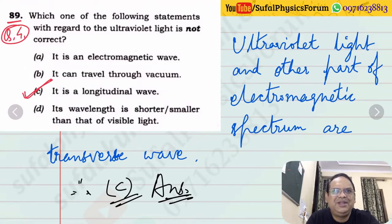Question number 4: Which statement about ultraviolet light is not correct? Ultraviolet light is electromagnetic waves - it's part of the electromagnetic spectrum, of course. It can travel through vacuum - definitely. It is a longitudinal wave - no, never. Because any electromagnetic spectrum is transverse in nature. This longitudinal wave statement is absolutely wrong here. Its wavelength is shorter than that of visible light - of course, this is also true. Ultraviolet light and other parts of electromagnetic spectrum are transverse waves. So option number C.